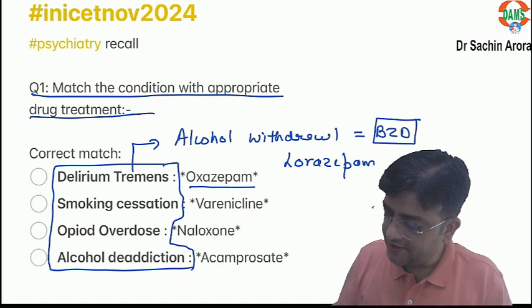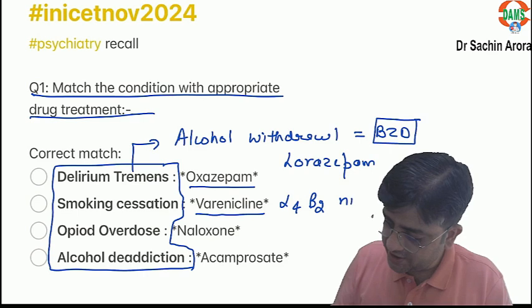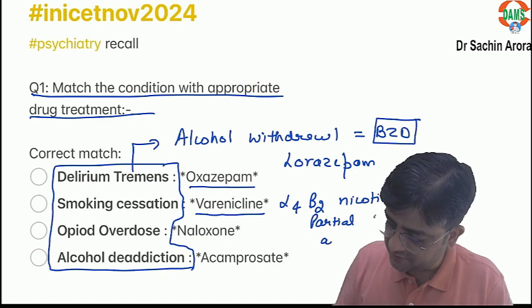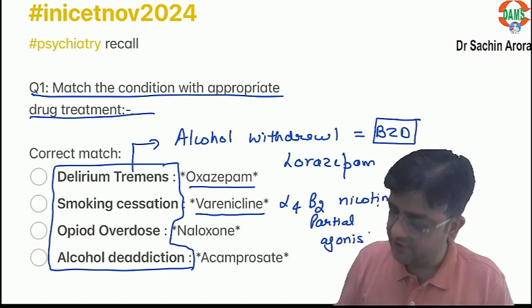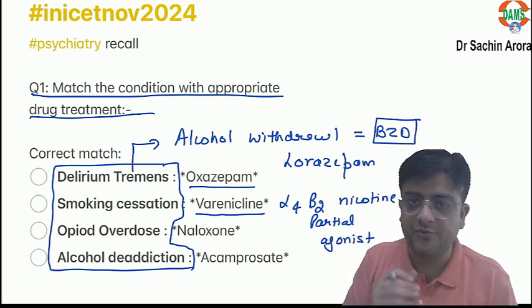Smoking cessation — varenicline, alpha-4 beta-2 nicotinic partial agonist. It is a previous year question. The two famous drugs for smoking cessation are varenicline and bupropion.